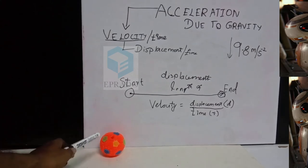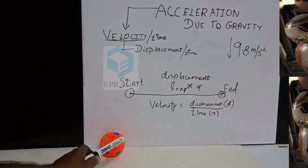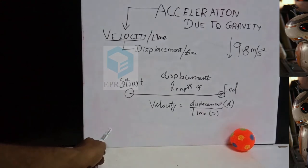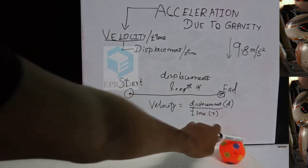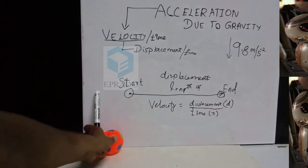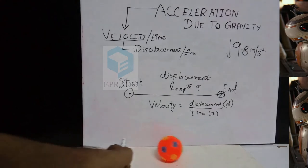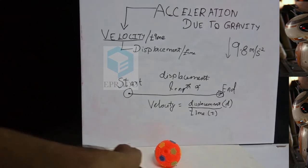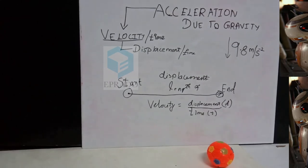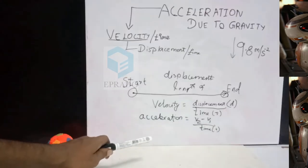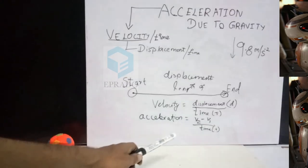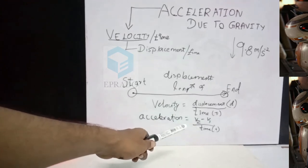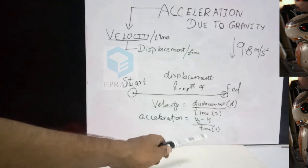First the ball will be at rest, so the velocity is at zero. When I tap for the first time the velocity will be V1. When I tap for the second time the velocity will increase and the new velocity will be V2. The third velocity will be V3 when I tap for the third time. So for every tap the velocity of the ball increases. Acceleration is the change in velocity with respect to time — that is the new velocity minus the old velocity divided by time.